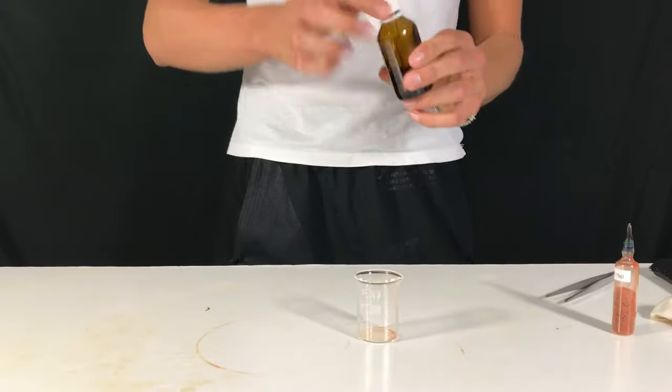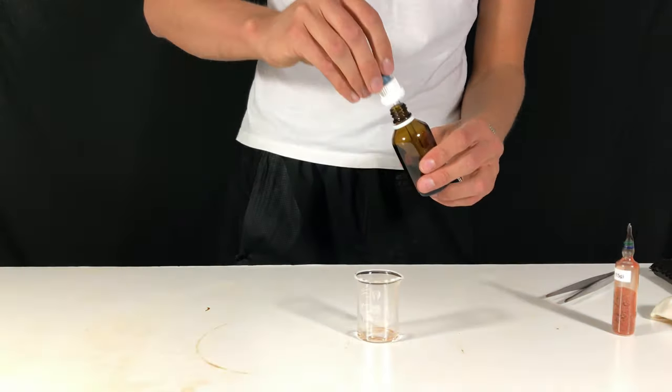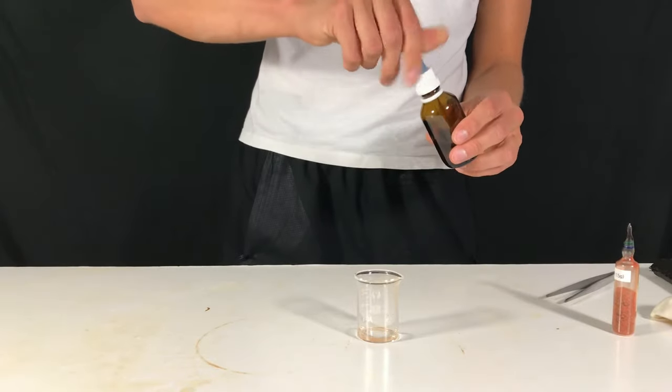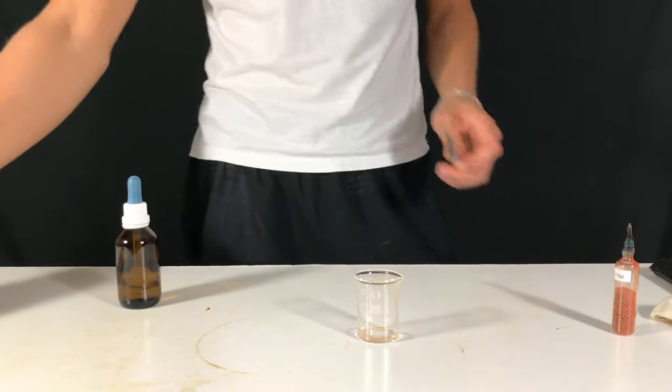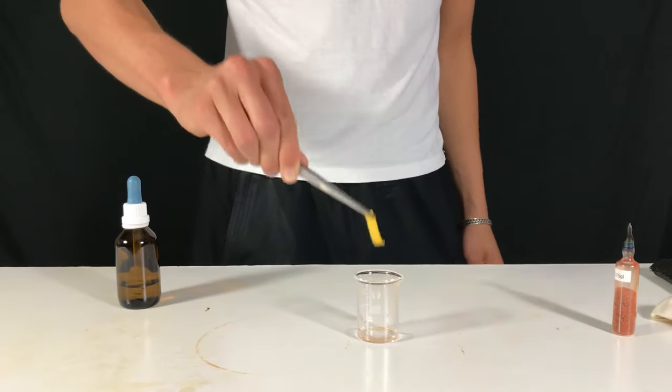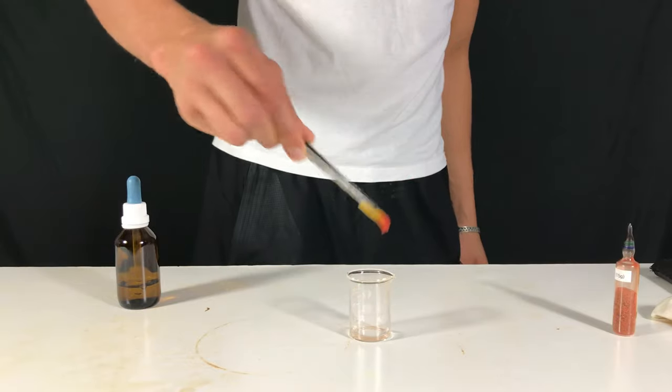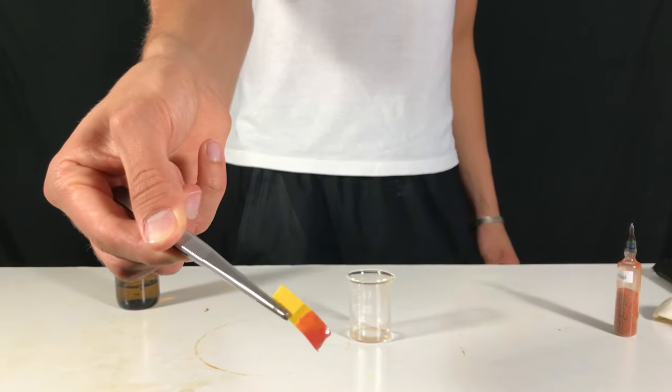Now for the fun part. We still had some leftover tin iodide. Therefore we added some distilled water. Tin iodide reacts with water to form hydroiodic acid. Using a pH strip you can see that it was instantly turned red which indicates the presence of acid.